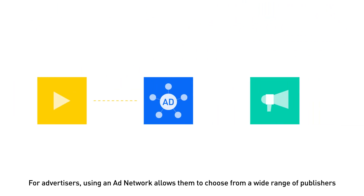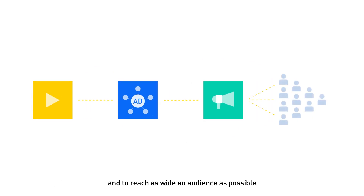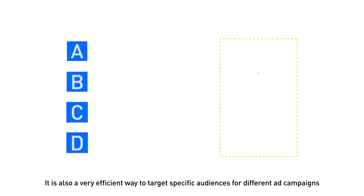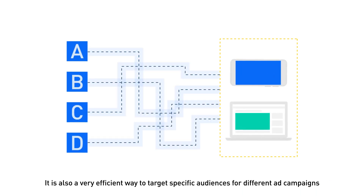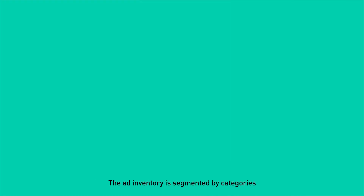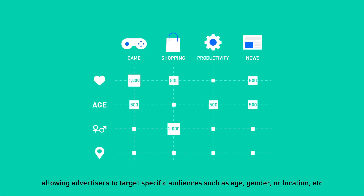For advertisers, using an ad network allows them to choose from a wide range of publishers and to reach as wide an audience as possible. It is also a very efficient way to target specific audiences for different ad campaigns. The ad inventory is segmented by categories, allowing advertisers to target specific audiences such as age, gender, or location, etc.